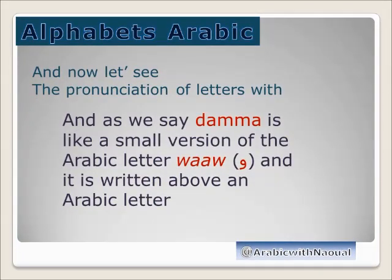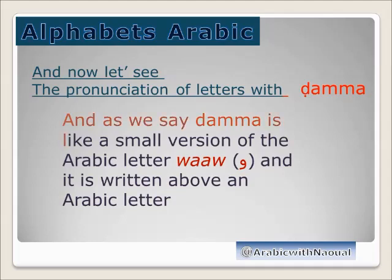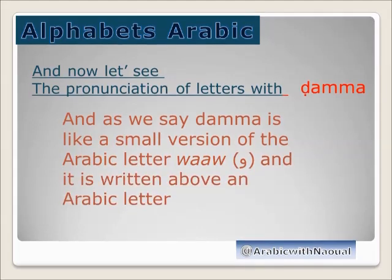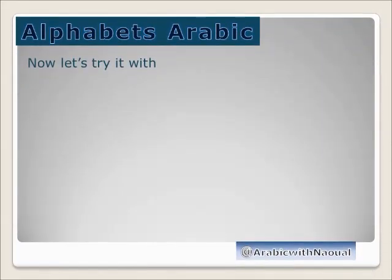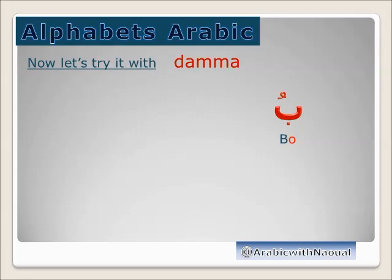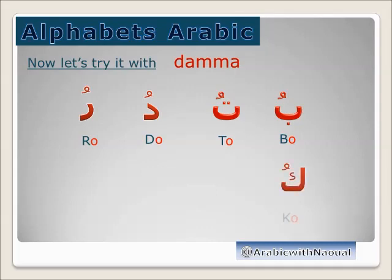Now let's see the pronunciation of letters with Dhamma. As we said, Dhamma is like a small version of the Arabic letter Waw and is written above the Arabic letter. Let's try it: BU, TU, DU, RO, CO, LO.